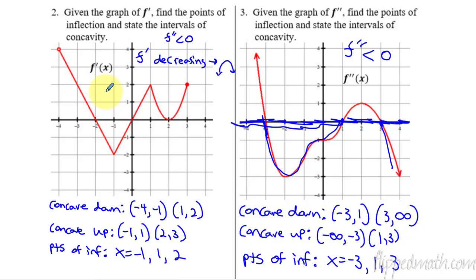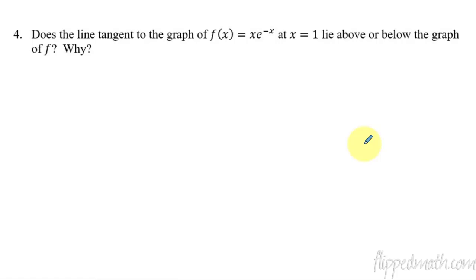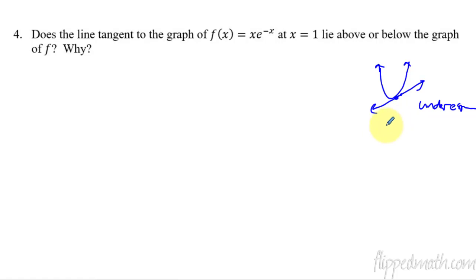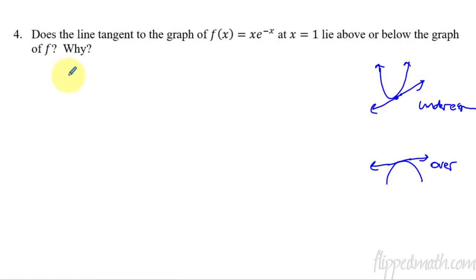So now you know how to read the graphs of f prime and f double prime. Last thing we have to cover: we're going to revisit what we talked about in 4.6. Do you remember when we had a concave up function, took a tangent line at a point, and used it to estimate — and that would be an underestimate? And if it was concave down, the tangent line would give us an overestimate for some point off the graph. Now that we can figure out the concavity of a function ourselves, we just need the second derivative. So let's take the first derivative to start — this is product rule: x times e to the negative x.